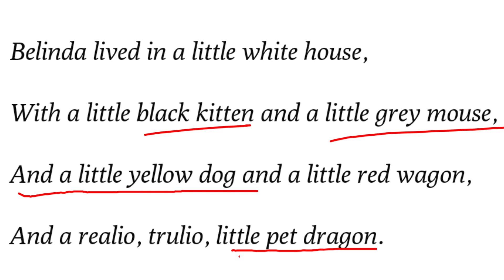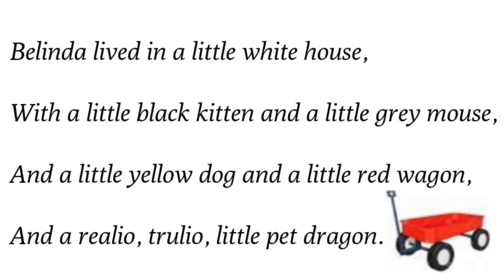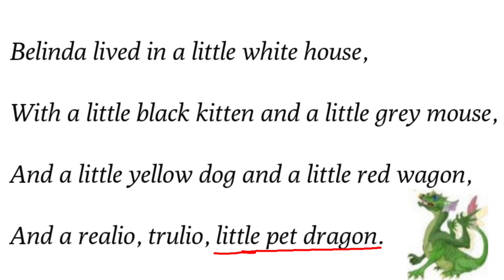In the first stanza, the names of the pets and Belinda, the owner, are described. She also had a little red wagon parked in the courtyard of her house. She had named the pets, including a really or truly little pet dragon. In reality, there is no animal called a dragon — it is an animal described in Chinese mythology. The word 'little' as an adjective is used to diminish its size from the very beginning.